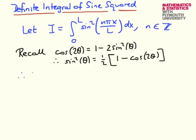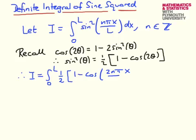So what we have, rewriting our integrand, is that I is the integral from 0 to L. We have a factor of one half, and the next line I'll take it outside of the integral. Then we have the integral of 1 minus the cosine of, and then it's 2 times the initial argument of the sine function, so that's 2nπx over L. Close brackets, integrate with respect to x.